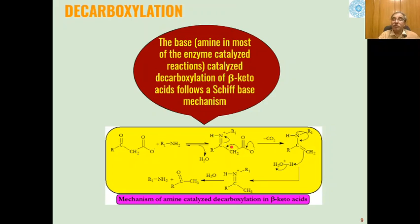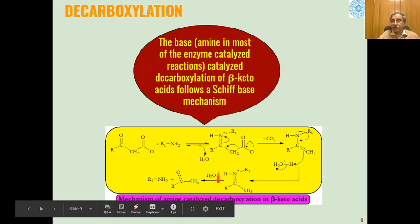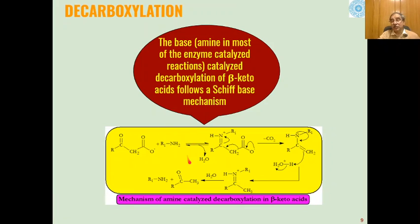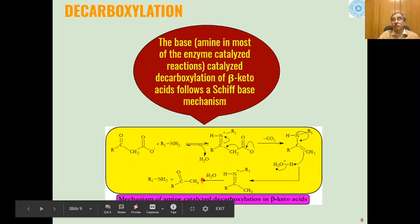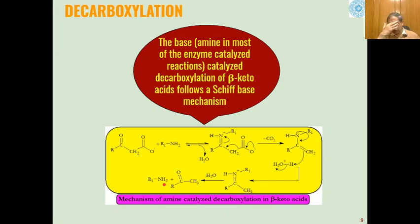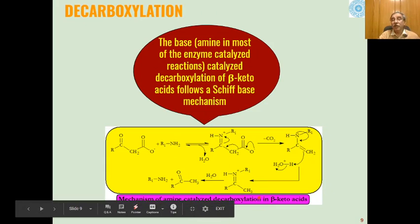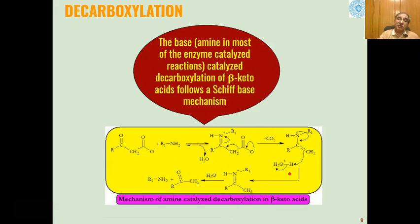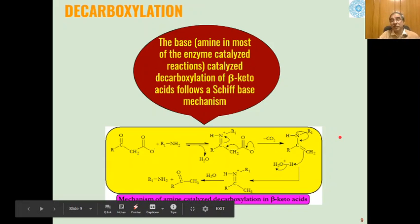Due to this decarboxylation, a carbon-carbon double bond is created and we get this type of enzyme-substrate intermediate. This then undergoes hydrolysis with removal of the amine part present at the active site of the enzyme and we get the product — that is ketones — as the product, while the amine acting as a catalyst is regenerated. This is how amine-catalyzed decarboxylation of beta-ketoacids takes place in enzymatic reactions.